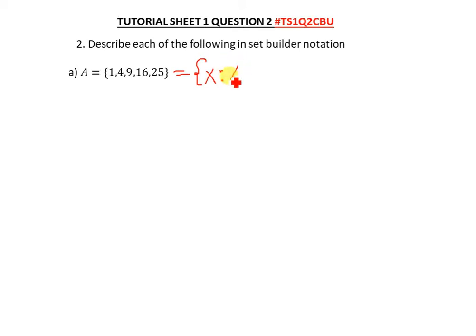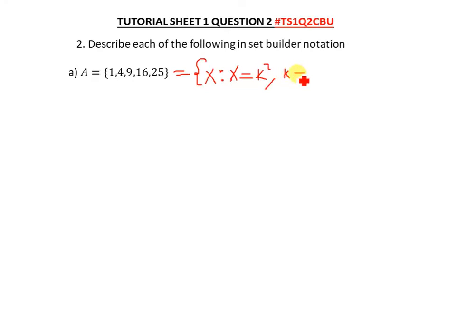So we write: x is such that x = k², where k — this comma means 'where'; you can write the word in full. Then k equals the values: 1 squared gives 1, 2 squared gives 4, 3 squared gives 9.